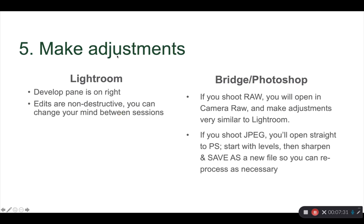Now you're going to make your adjustments. In Lightroom, the develop pane is on the right and edits are non-destructive — you can change your mind between settings. In Bridge and Photoshop, if you shoot RAW, everything will open in Camera RAW, which is an intermediate application, and you'll make adjustments there very similarly to Lightroom. If you shoot JPEG, you'll go straight into Photoshop — start with levels, then a little sharpening, and save as so you can reprocess as necessary. With a JPEG, it's really important to save as a new file so you can go back to the original.